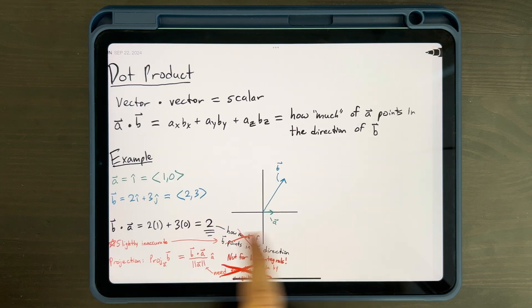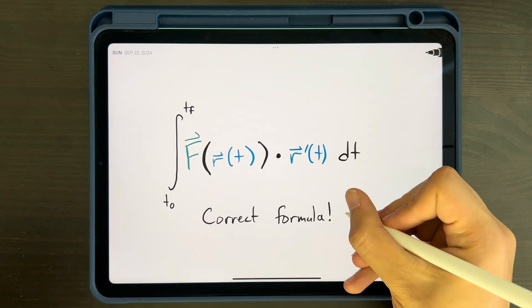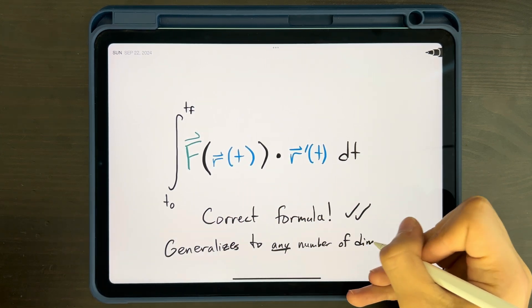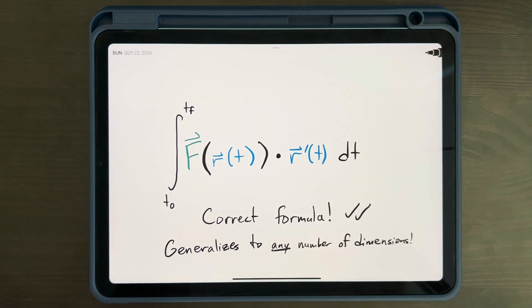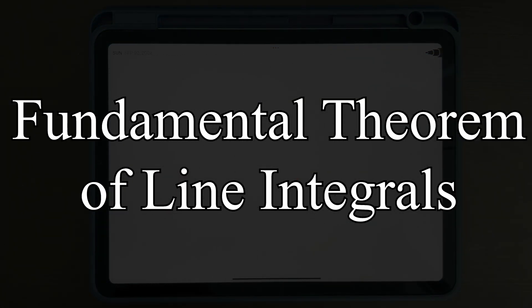Great. So now we know how to find a line integral over a curve C for a vector field f. Note that this expression generalizes to any number of dimensions, since r prime of t can exist in any number of dimensions as well. The only requirement is that the integrating curve exists in the same dimensional space as our vector field. Now that we have the relevant background, we can start talking about the fundamental theorem of line integrals, the culmination of this video.